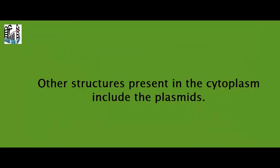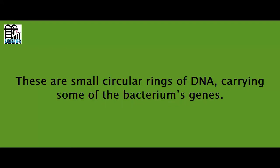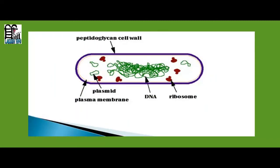Other structures present in the cytoplasm include plasmids. These are small circular rings of DNA carrying some of the bacterial genes. Not all bacteria contain plasmids, although about three quarters of all known species do, and plasmids have very important uses in genetic engineering.